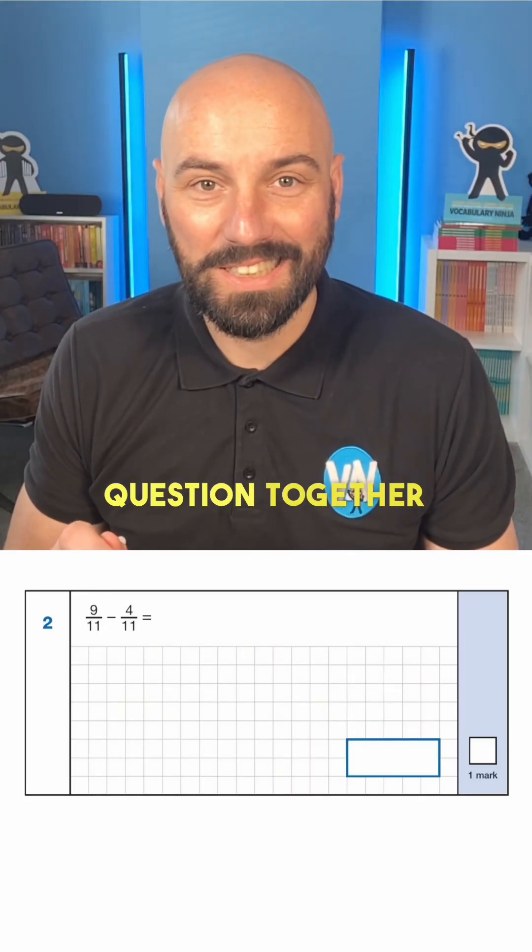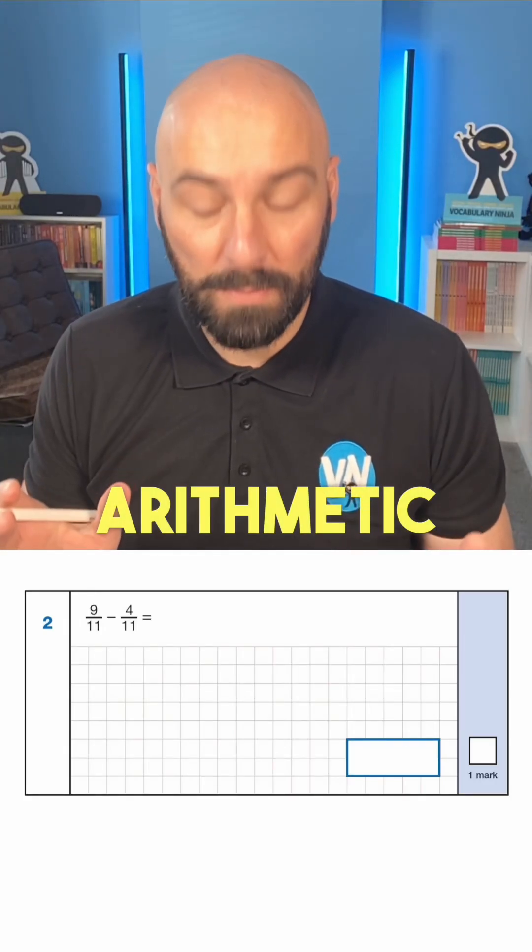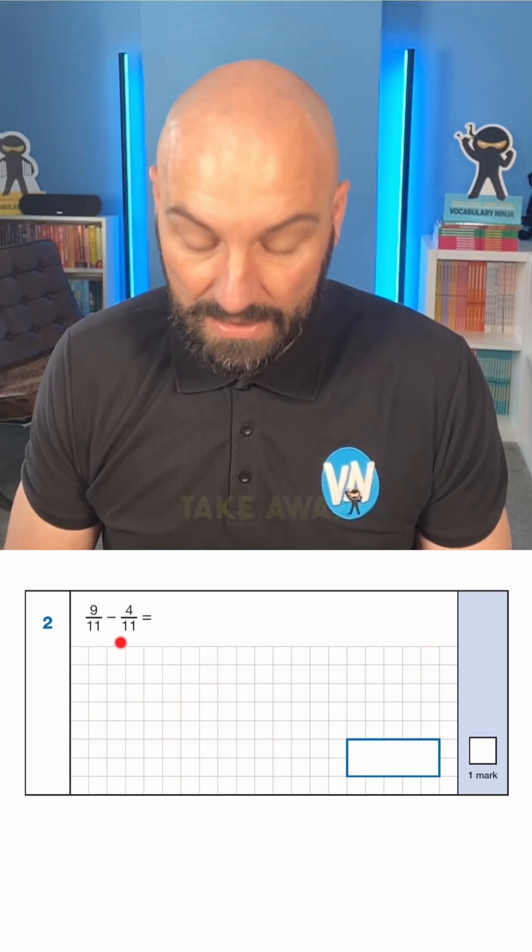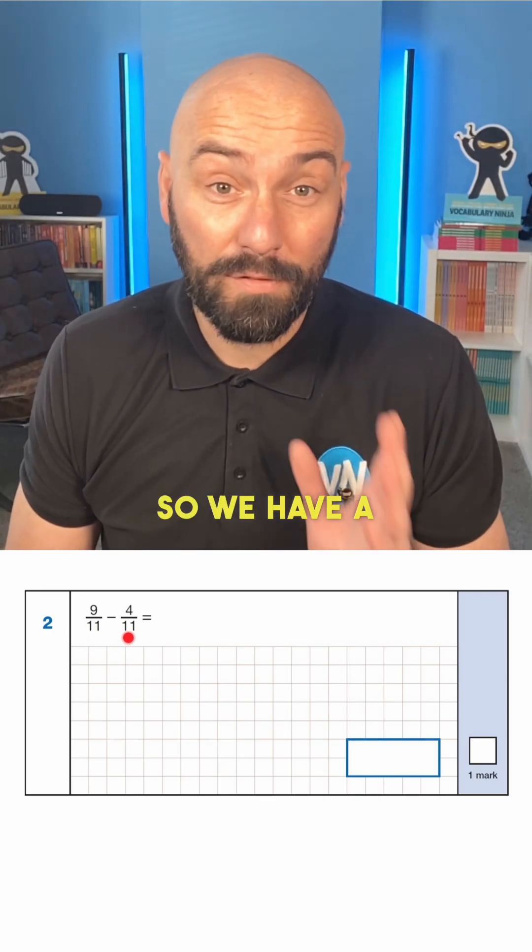Let's solve another SATs question together and today's question is an arithmetic question. As you can see here we have 9 elevenths take away 4 elevenths. So we have a fractions question.